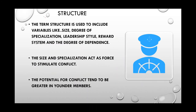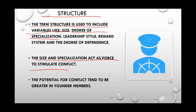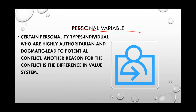Second is structure — variables like size of the organization, degree of specialization, leadership style, rewards, and degree of dependence. The larger the group and the more specialized its activity, the greater will be the conflict. The potential for conflict tends to be greatest among younger members. The third is personal variables — authoritarian people who follow rules and regulations very strictly, and dogmatic people who follow discipline strictly, can lead to potential conflict. The value system can also be another reason for conflict.